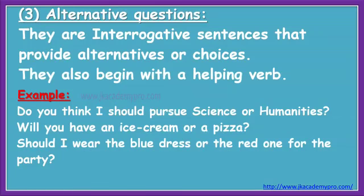The third type of interrogative sentences are alternative questions. These are interrogative sentences that provide alternatives or choices. They also begin with a helping verb. For example: 'Do you think I should pursue science or humanities?' 'Will you have an ice cream or a pizza?' 'Should I wear the blue dress or the red one for the party?'